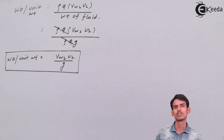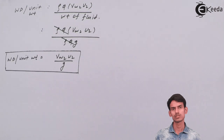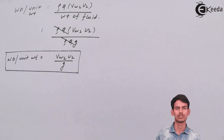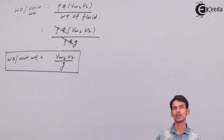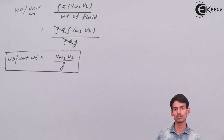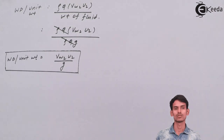We've now seen the three efficiencies, the force imparted on the jet by the impeller, work done per second, and work done per unit weight. That covers the topic of work done and forces. We'll use all these formulas in the numerical sessions. I hope you've understood — thank you.